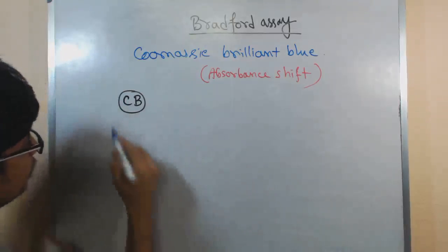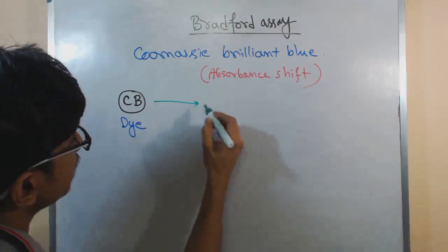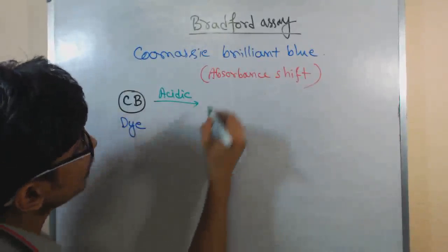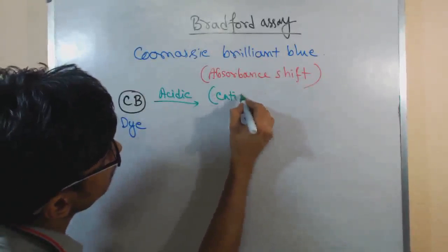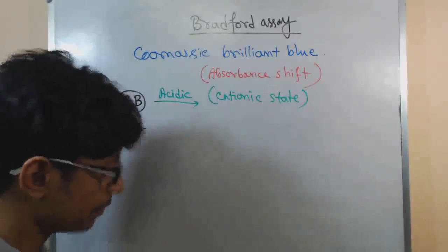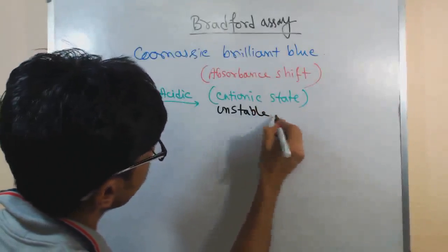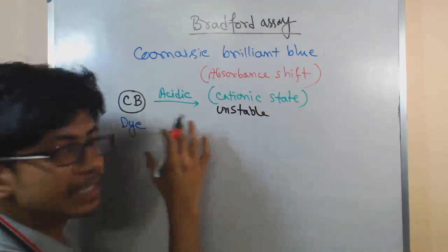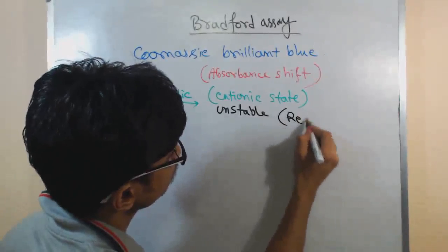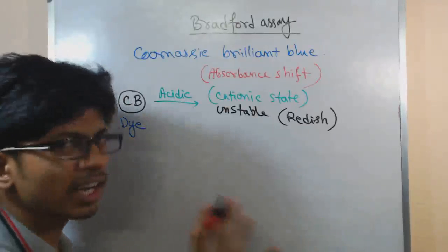First state is the state where it's an acidic state or it is also called as a cationic state, and this state is unstable. This is also called the unstable state. In this acidic state, this Coomassie brilliant blue dye has a color reddish, red coloration, dark reddish coloration.